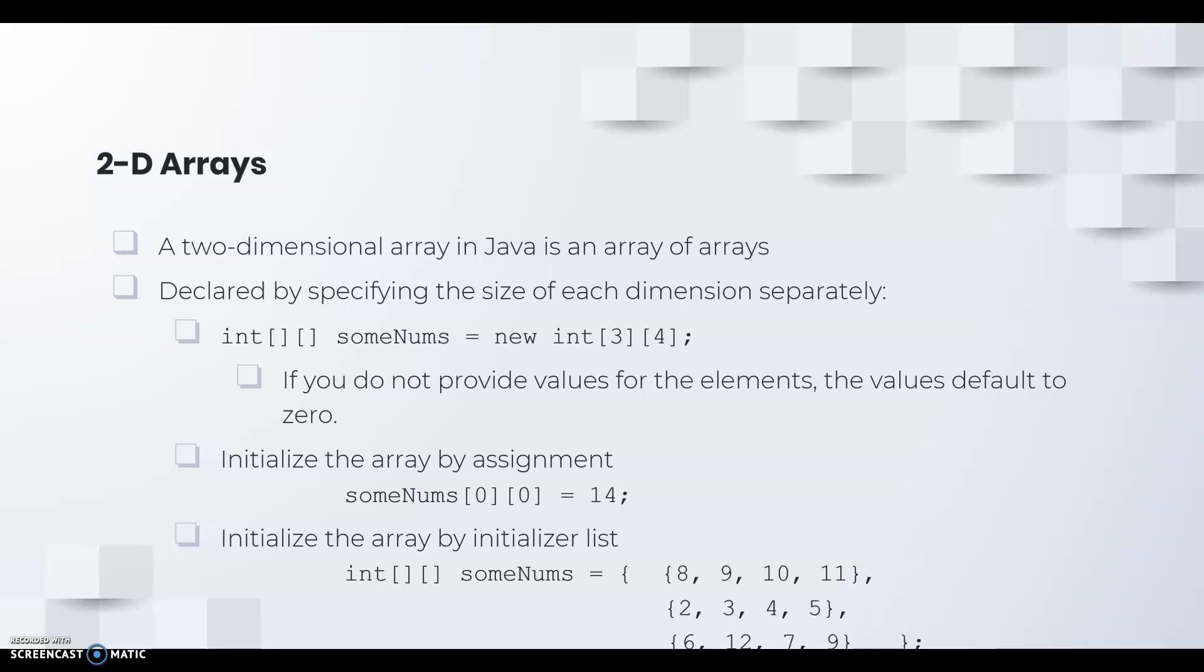Every cell in the 2D array is assigned a pair of coordinates that are based on the row number and the column number. The first pair of brackets represents the row number and the second pair of brackets represents the column number. The rows and columns both begin at zero and end with one less than the number of rows or columns.